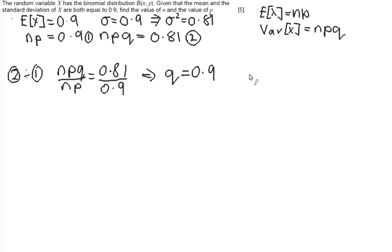So if q is equal to 0.9, p is equal to 1 minus q and so p is equal to 1 minus 0.9 is 0.1. So I've got my p. Now I've got my p, I can use that in my equation np. So I'm just going to sub into 1.